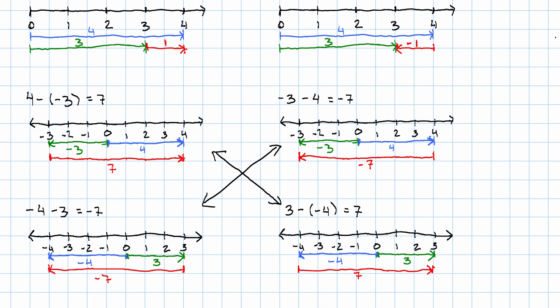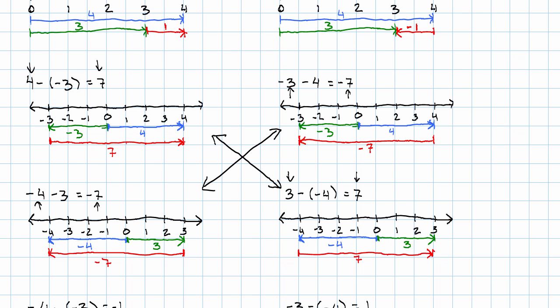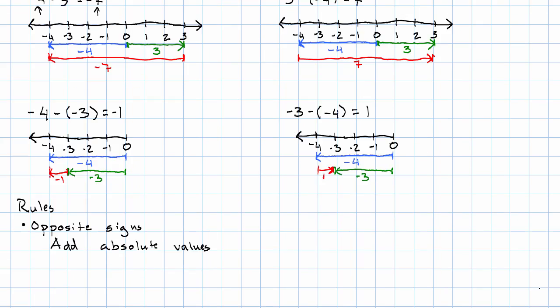And how do we know what the sign is? Well, positive, positive, positive, positive, negative, negative, negative, negative. The sign is going to match the first number. We add the absolute values and the sign matches the first number.